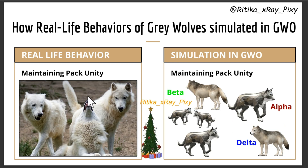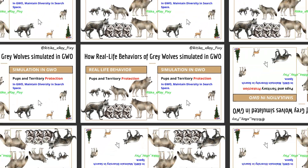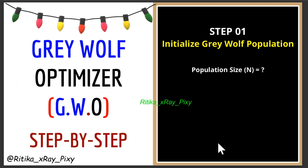Next point: maintaining pack unity. In real life, wolves maintain pack unity through communication via howls, body language, and senses. In this algorithm, to simulate this behavior, we use alpha, beta, and delta solutions to guide the pack — they perform a coordinated search. Next point: pup and territory protection. In real life, wolves balance hunting, protecting their young, and maintaining their territory and dominance. In this algorithm, we maintain diversity in the search space to prevent premature convergence and ensure robust results.